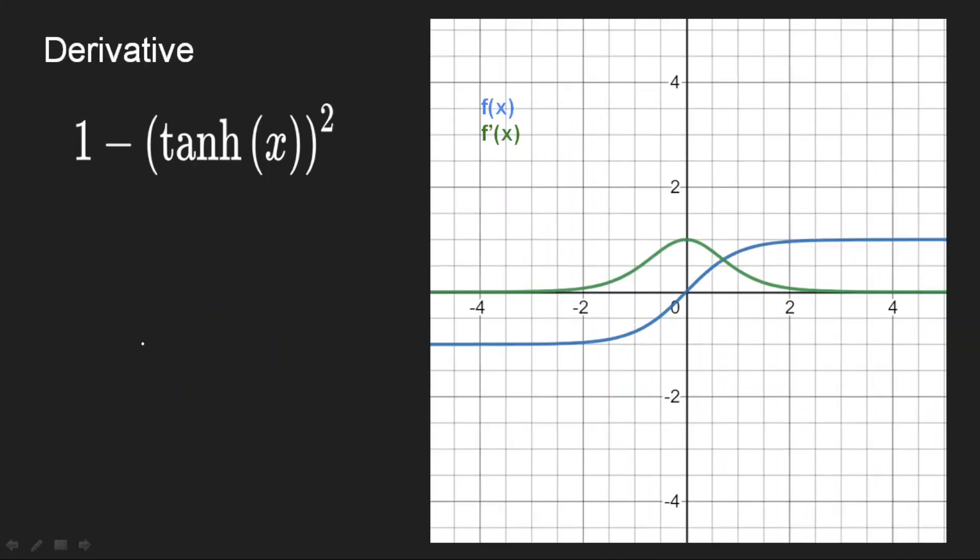Now let us look at the derivative of the function. If you calculate the derivative, it will come down to 1 minus tanh squared. The derivative is only varying between minus 2 and plus 2. Only between these two values, the derivative has some change. After that, as you go in both the extremes, it is almost getting saturated. The derivative is looking same as sigmoid and this also has vanishing gradient problem. It has solved the requirement of zero-centered activation, but it does not solve the problem of vanishing gradient.